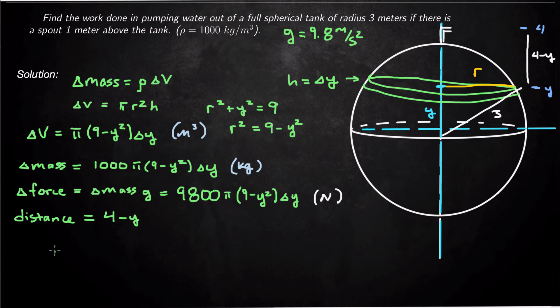So now that's the force, that's the distance, we can get the little bit amount of work. So how much work is required to move this sheet of water? Well, it's going to be force times distance. So 9,800 π times (9 - y²), that's the force, well the delta y needs to be included, and then the distance is 4 - y, delta y. And now that's joules. So that's how many joules it takes to just get that one green sheet of water out the top of the tank.